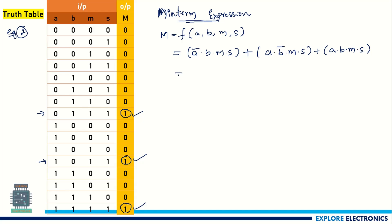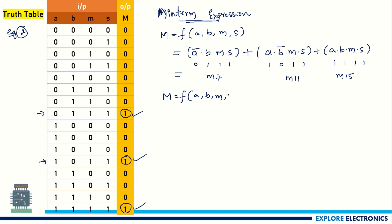Now let me convert this into min terms. a-bar is 0, b is 1, m is 1, s is 1 — that is 0111, which is 7, so m7. For 1, 0, 1, 1 — that is 1011, which is 11, so m11. And 1, 1, 1, 1 is 15, so m15. So M as a function of a, b, m, s equals summation of min terms (7, 11, 15). This is the min term expression.